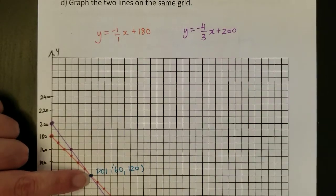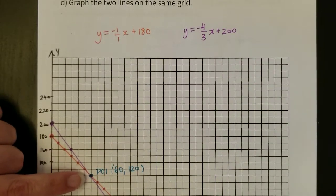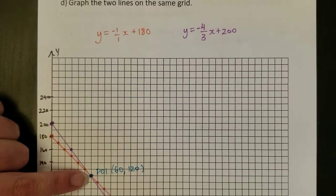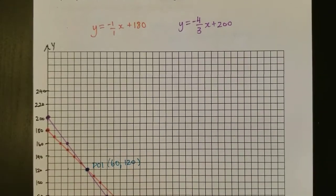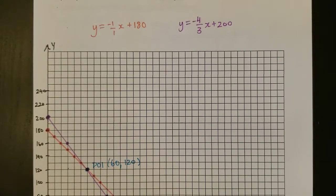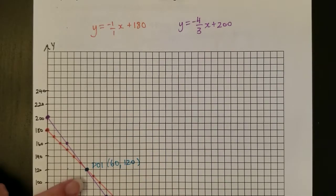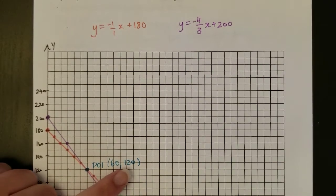Now, we want to label the POI. So wherever those two lines cross, and you can see hopefully that it's really important here that you graph accurately with a ruler and with measuring out your squares. Then we can label that with the X coordinate and the Y coordinate. So it's 60, 120.